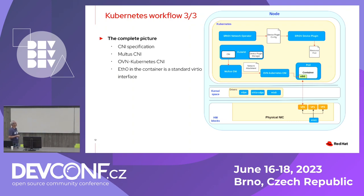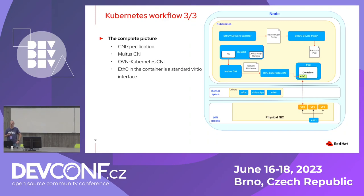When we create the pod, we specify which network to use via the network attachment definition. Multus then delegates the job to OVN-Kubernetes, which takes the VDPA device and moves it inside the pod namespace. It also takes the port representor and adds it to the OVS bridge. By the end of this interaction between Kubernetes components, we have a standard VDPA interface created in the pod — the eth0 shown in the picture.